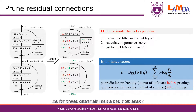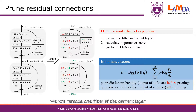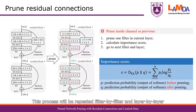As for those channels inside the bottleneck, we just follow previous methods. We remove one filter of the current layer and then calculate the importance score. This process will be repeated filter by filter and layer by layer.